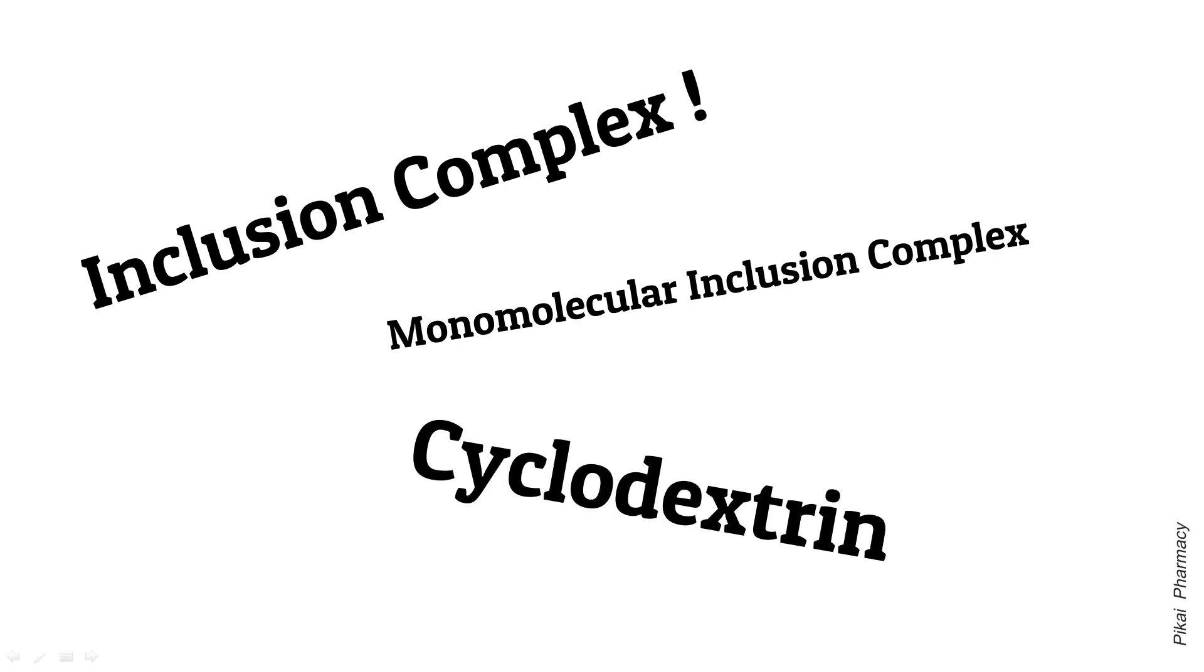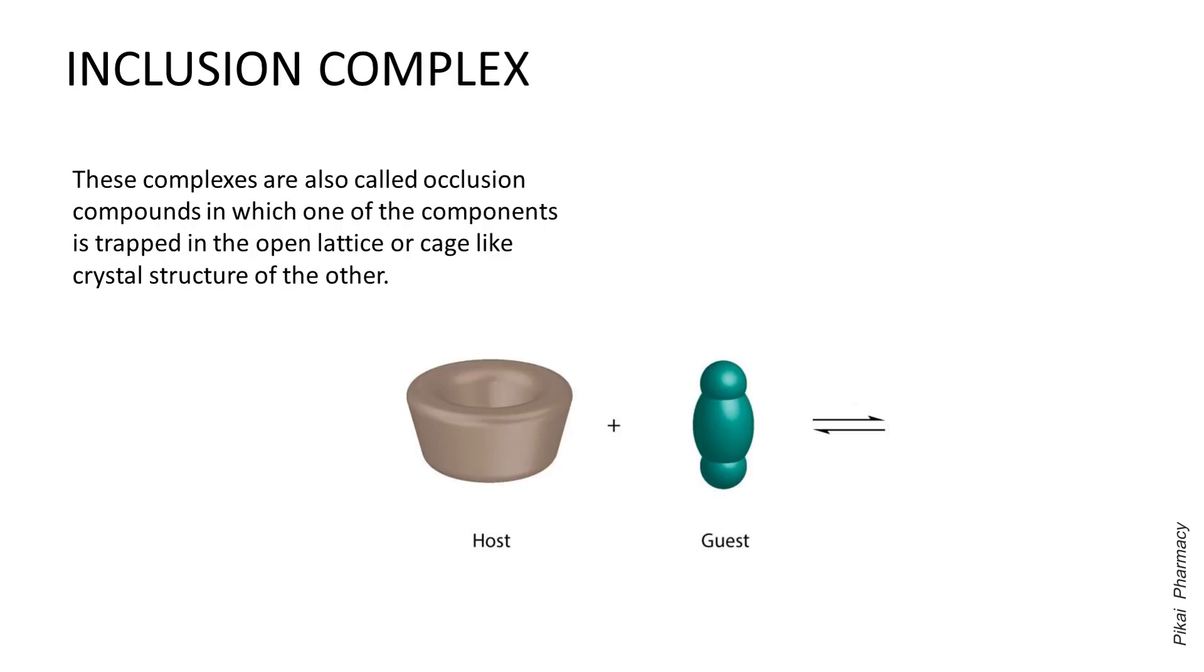Before going towards cyclodextrin, I would like to say a few words about inclusion complex. Inclusion complex, or also called occlusion compounds, is a type of complex where one of the components is trapped in the open lattice or cage-like crystal structure of the other component.